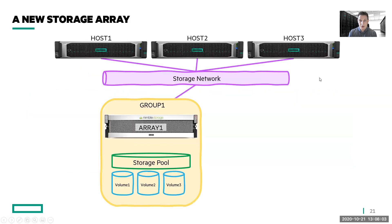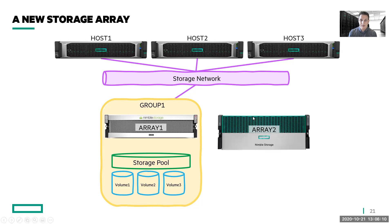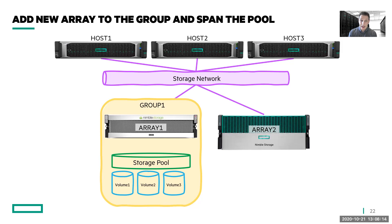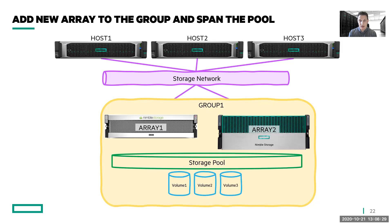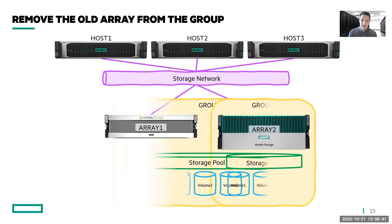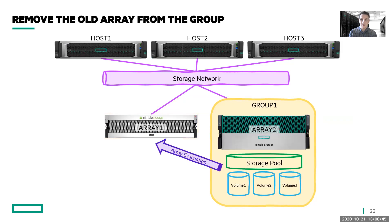If you were going to use pool spanning for migration, it would look like this. Our new array comes in and we connect it to the network. We then log into the old array and add the new array into the group — now the group is made up of two arrays, the old one and the new one. The next step is to span the pool across into the new array. Now the volumes are running on both arrays because your storage pool is spanned across both. The next step is to remove the old array from the group. Once that array is evacuated, you are back to a group of one. The volumes are part of the storage pool, and the storage pool simply contracts so that it is on the second array.